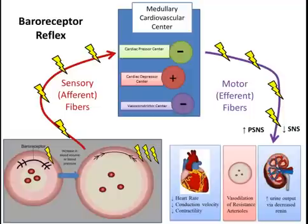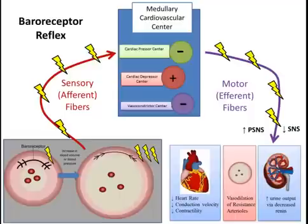Reflex arcs may be autonomic, such as the baroreceptor reflex we have just seen, which involves a division of the nervous system called the autonomic nervous system. Other reflex arcs, such as the knee-jerk reflex a doctor may conduct during a physical, involve the somatic nervous system.